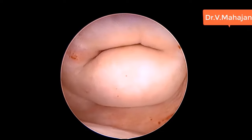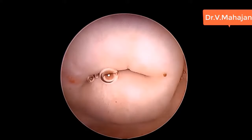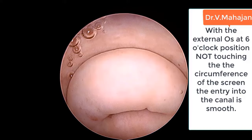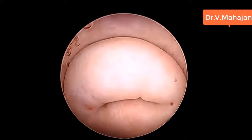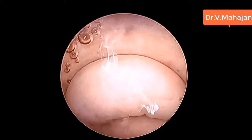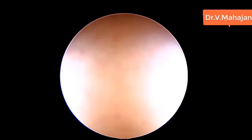It is not easy to enter when the external os is in the center of the screen. So if you want to have a smooth entry into the cervical canal, the external os should be at the 6 o'clock position, not touching the circumference of the screen, and you will invariably enter the cervical canal very smoothly.